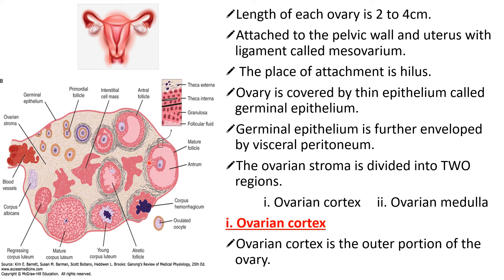Inside is the ovarian stroma. This inner portion is called the ovarian stroma, and it is divided into two regions. One is the ovarian cortex — this outer portion is called the ovarian cortex. The other region of ovarian stroma is the ovarian medulla, which occupies the central part.